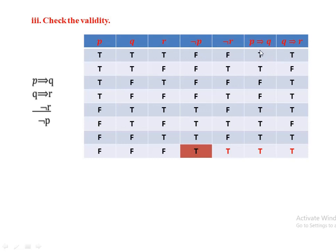P implies Q, using the definitions of implication, is false only if P is true and Q is false. So P implies Q has truth values: true, true, false, false, true, true, true, true across the eight rows.